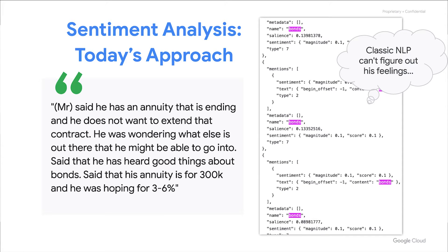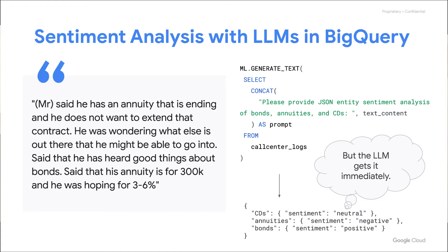Today we are limited to NLP models that are not very good at this task. And so if we have call center records that we want to turn into predictive features, the models get very confused and they return results that we can't use. Once we started using the LLM feature inside of BigQuery, we noticed two things. The machine had managed to capture the real nuance and feeling in the human text.